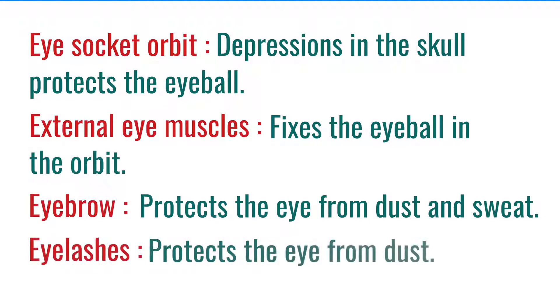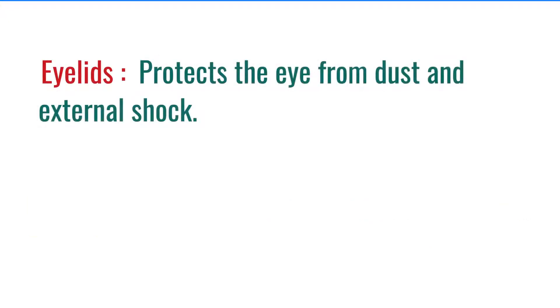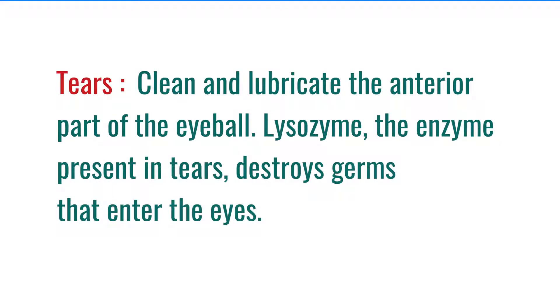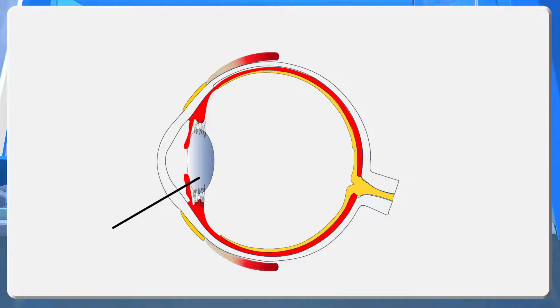Eyelashes: Protects the eye from dust. Eyelids: Protects the eye from dust and external shock. Conjunctiva: Secrets mucus which protects the anterior portion of the eyeball from being dry. Tears: Clean and lubricate the anterior part of the eyeball. Lysosomes: The enzyme present in tears destroy germs that enter the eyes.